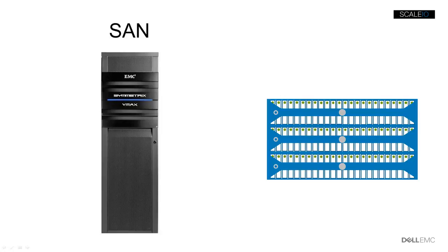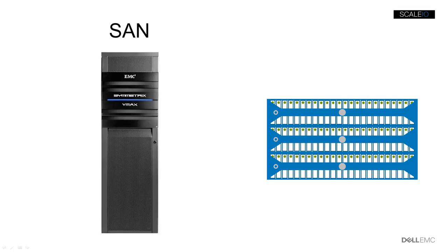Operating systems and hypervisors need data storage. SANs abstract block storage using LUNs in a storage array. Arrays are nice because they provide reliability, performance, and capacity aggregation. LUNs are nice because they are OS-agnostic and can support multiple operating systems and hypervisor clusters. ScaleIO provides a SAN alternative that abstracts data storage across a group of standard servers using what is called a storage pool.